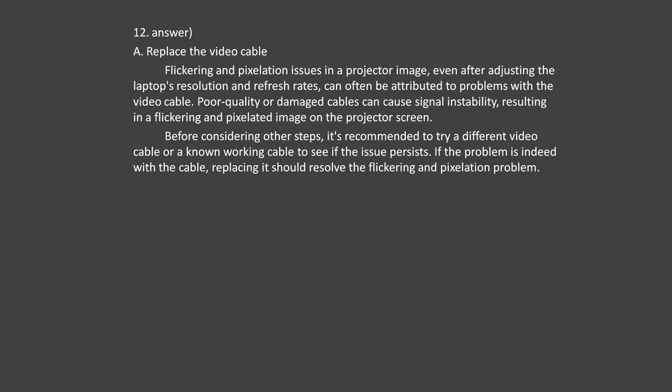Answer number 16: Option A — replace the bad drive and re-sync the array. RAID 1 (mirroring) duplicates data across two drives, providing redundancy. If one drive fails, the other still contains all the data. To resolve this alert, replace the failed drive with a new one and allow the RAID controller to rebuild or re-sync the array. This ensures data redundancy and minimal downtime since the RAID controller will copy data from the operational drive to the new drive — the standard procedure for maintaining data integrity in a RAID 1 configuration.